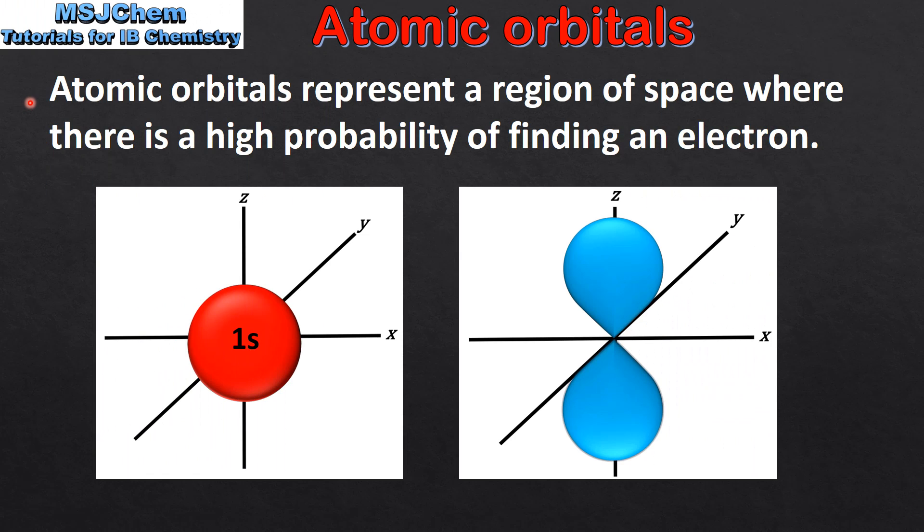Atomic orbitals represent a region of space where there is a high probability of finding an electron. According to the Heisenberg Uncertainty Principle, it's not possible to know the exact location of an electron within an atom.